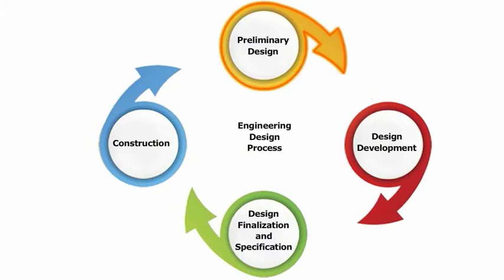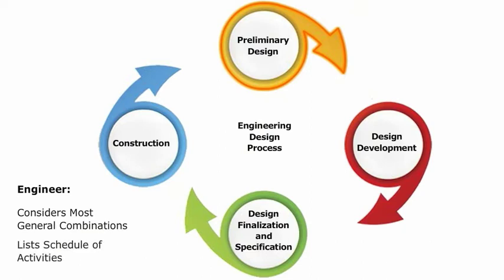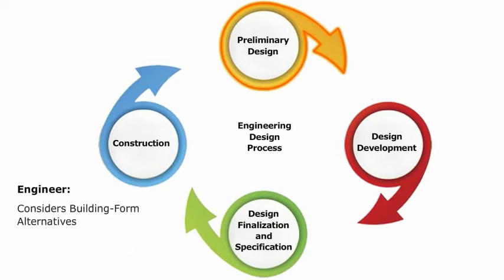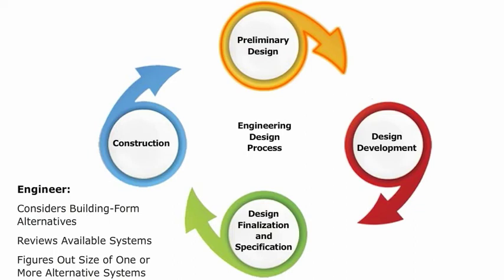During the preliminary design phase, the engineer considers the most general combinations of comfort requirements and climate characteristics, lists the schedule of activities that will take place in the space along with the conditions required for comfort during performance, analyzes the site's energy resources, lists design strategies to accommodate the climate, considers building form alternatives with the architect, reviews available systems including both passive and active alternatives, and figures out the size of one or more alternative systems using general design guidelines.